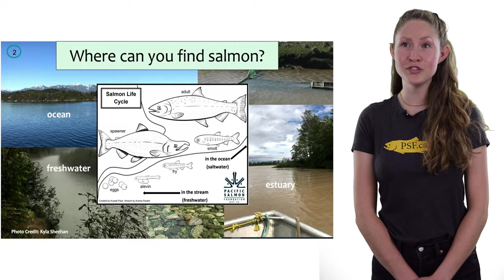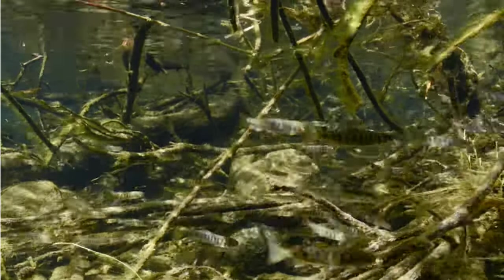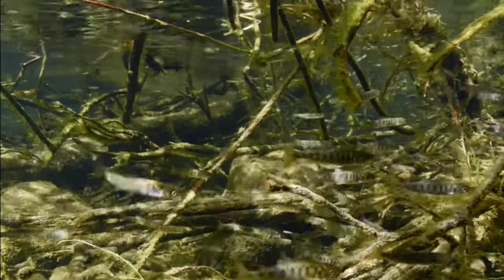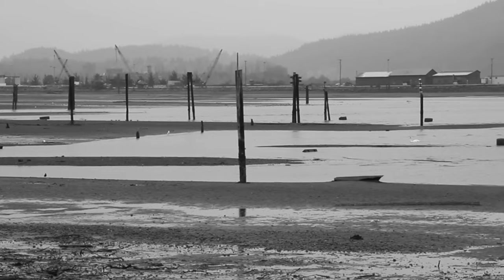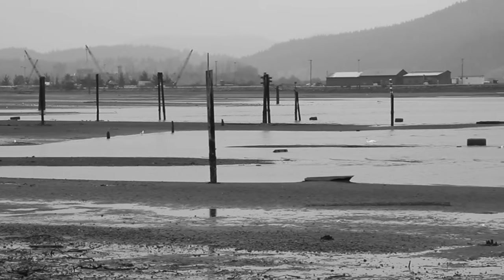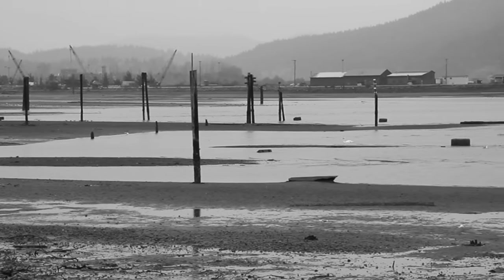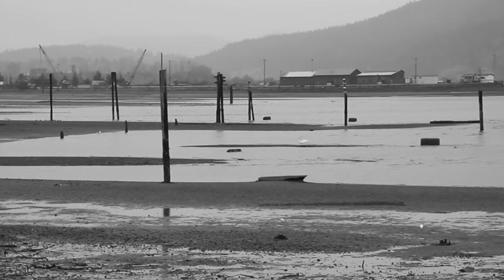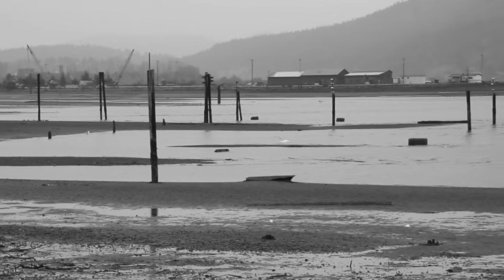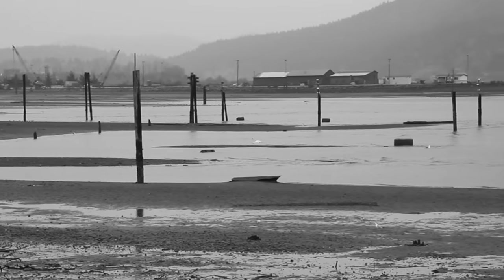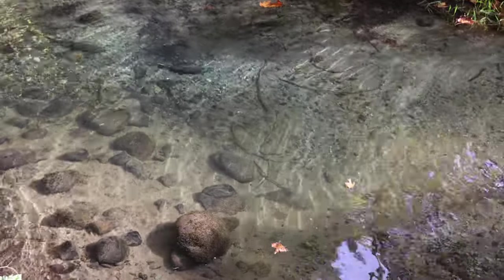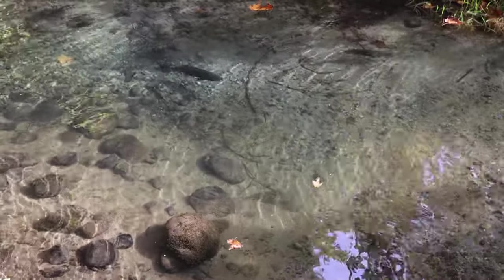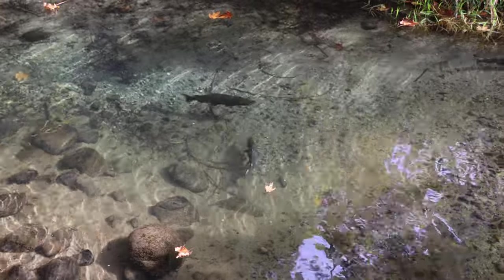As tiny juveniles they make their way downriver into estuaries, doing lots of growing along the way. Estuaries are important habitats where their bodies adjust from being in freshwater to the saltwater of the ocean. Then they spend one to four years in the ocean migrating all the way up to Alaska. When they're ready, they begin their long journey back up to the river where they were born to spawn.